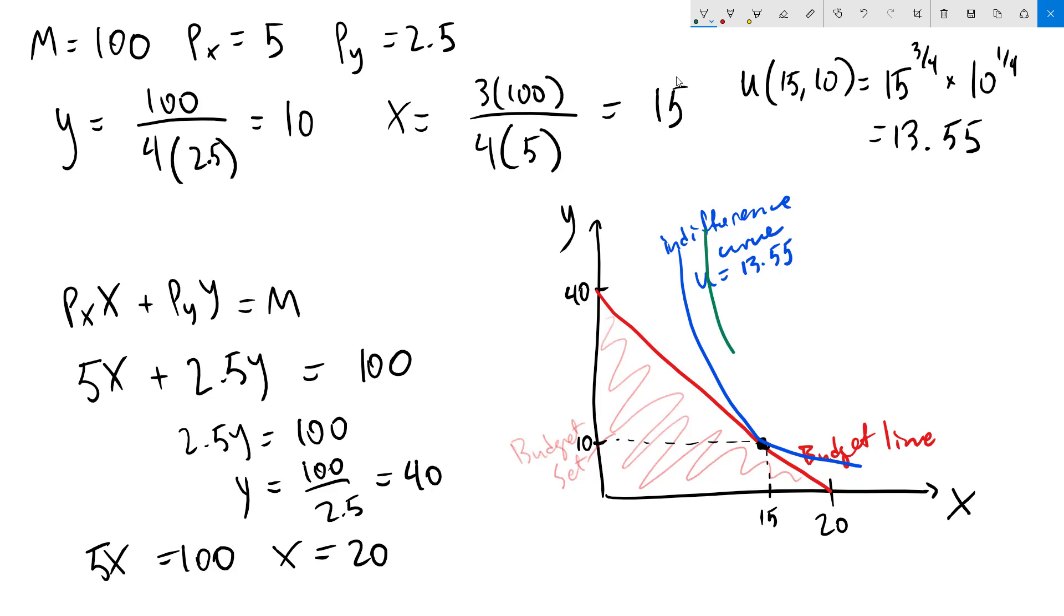But if we were to be on a higher indifference curve like this one, all these bundles would give us more than 13.55 utility. And that's all there is to it. This might seem complicated at first, but once you've gotten a few of these under your belt, they're not so bad. If you have any questions, please let me know. Thanks for watching.